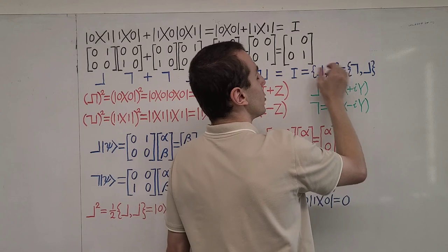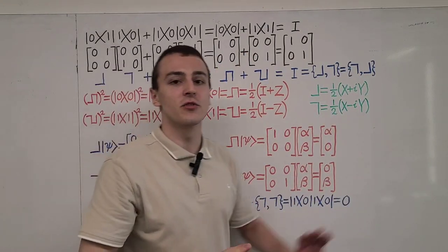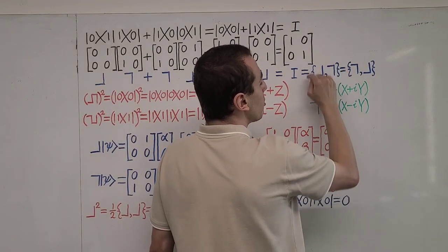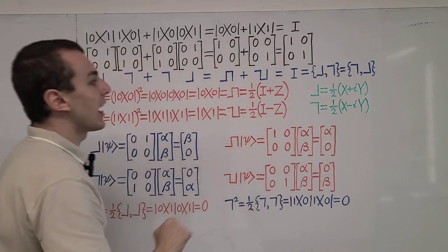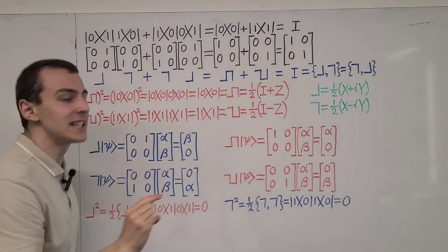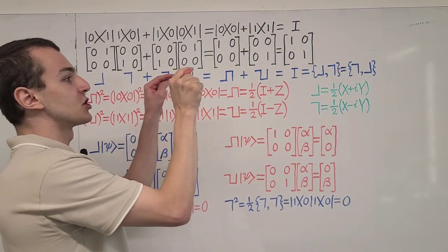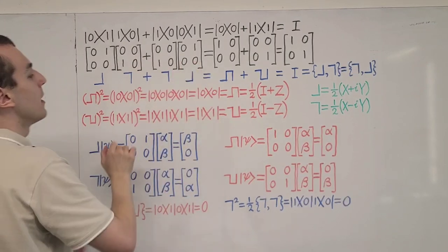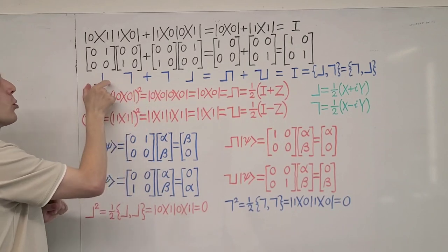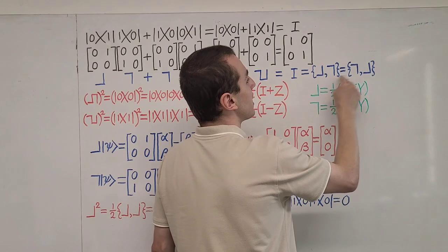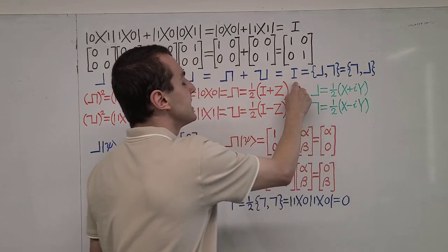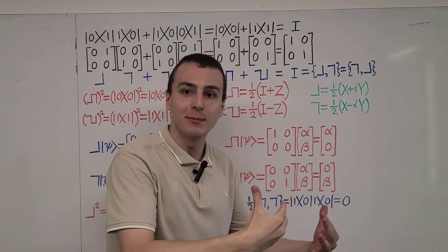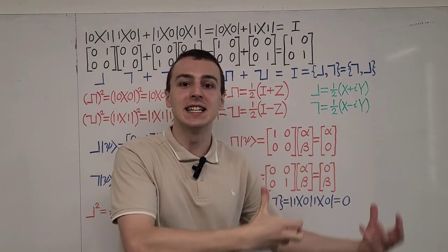Anti-commutators are denoted by these curly brackets. Don't confuse this notation with Poisson brackets — Poisson brackets also use this kind of notation, but that's in the context of classical mechanics. The anti-commutator has a plus sign; it does not have a minus sign. If we were taking the commutator, we would use square brackets with a minus sign. So this is a very important property: if we take the anti-commutator of the lowering and raising operators, we will get the identity operator.